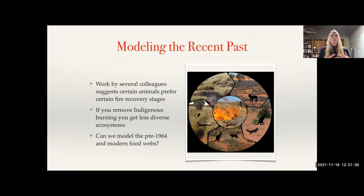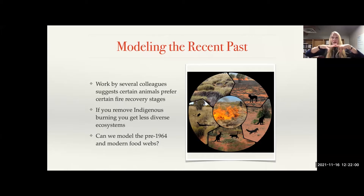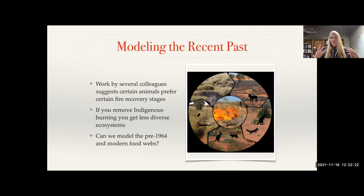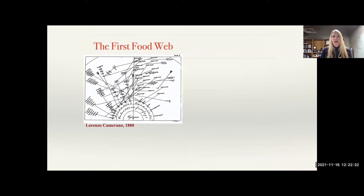Colleagues Rebecca Bird and Dale Nimmo work on understanding how certain animals prefer different recovery stages of fires. If you have a patchy landscape, each organism can enjoy different growth stages of those areas. But if you take that away — if everything grows homogeneously and then burns from a lightning fire in summer — you're modifying the habitat that people were integral in creating. By looking at Mardu's effects within the food web, we can look at how they were making the ecosystem more sustainable for a larger number of taxa.